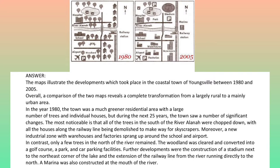In contrast, only a few trees in the north of the river remained. The woodland was cleared and converted into a golf course, a park, and car parking facilities. Further developments were the construction of a stadium next to the northeast corner of the lake and the extension of the railway line from the river running directly to the north.